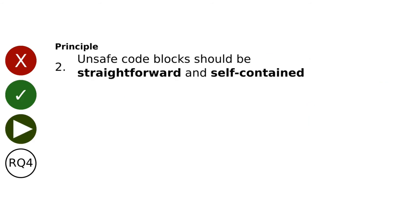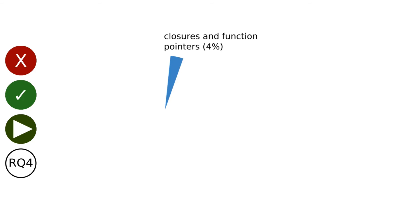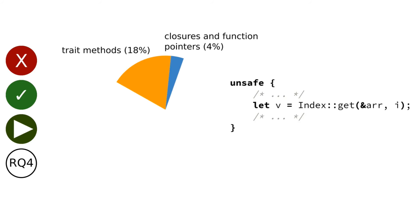The second principle also requires unsafe blocks to be self-contained. Therefore, we also looked at the following question: is the behavior of unsafe code dependent only on code in its own crate? To answer this, we looked at function calls made in unsafe blocks. We found that 4% are calling closures and function pointers, and 18% are calls of trait methods such as get on the trait index. We manually checked 100 randomly selected calls and found that in 82 cases the call can be determined statically, so these calls do not add substantially to the complexity of the unsafe block.